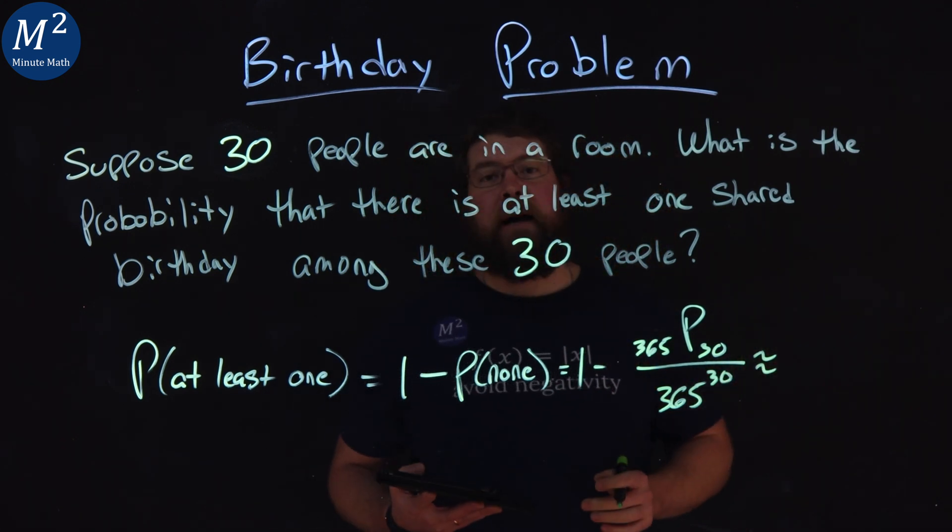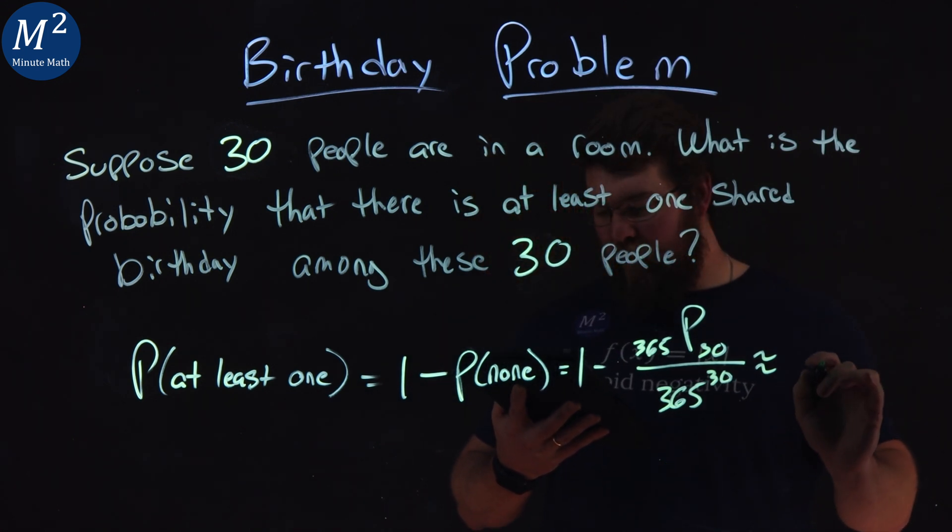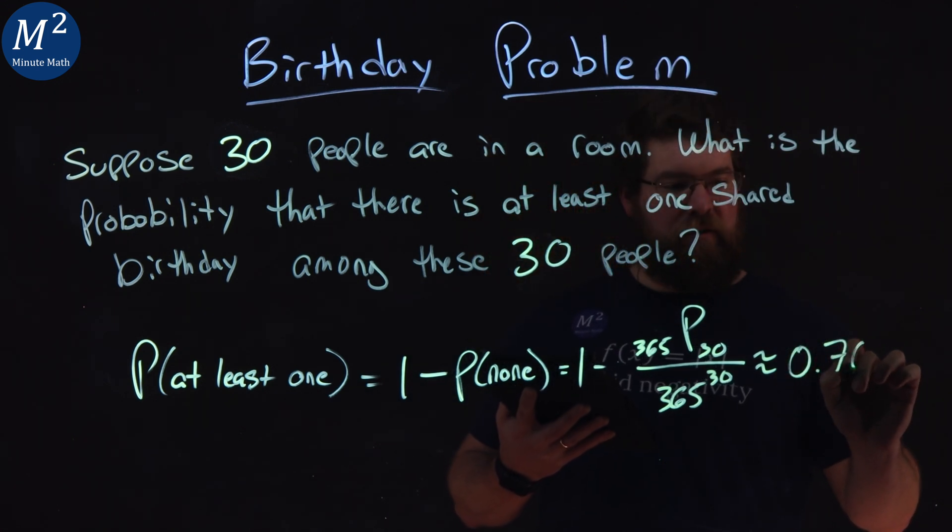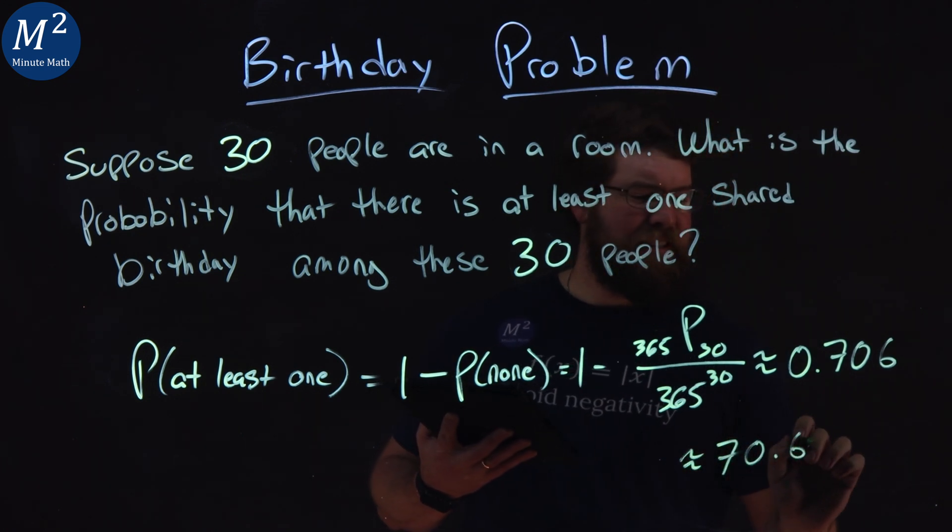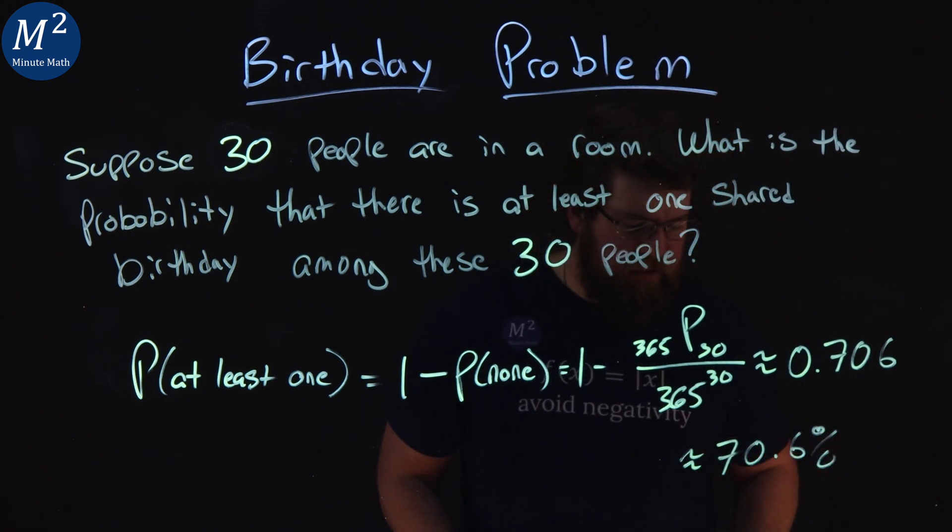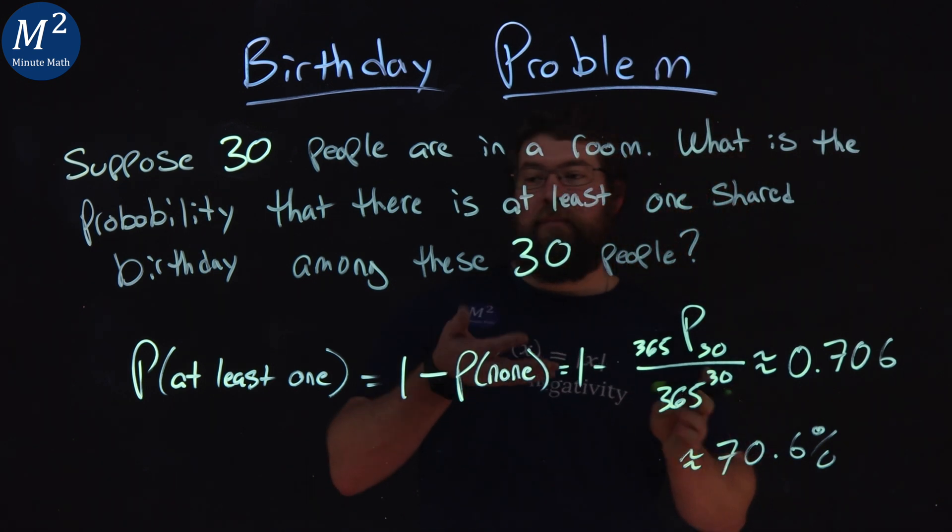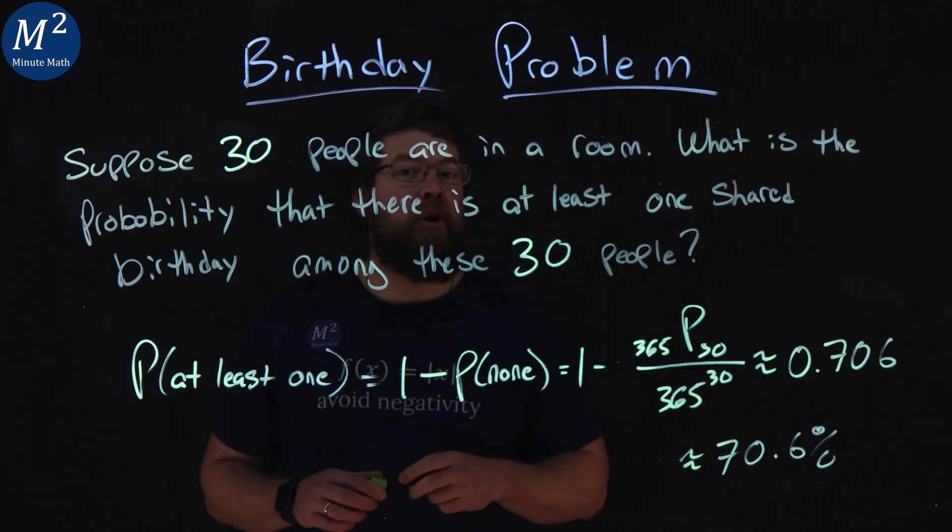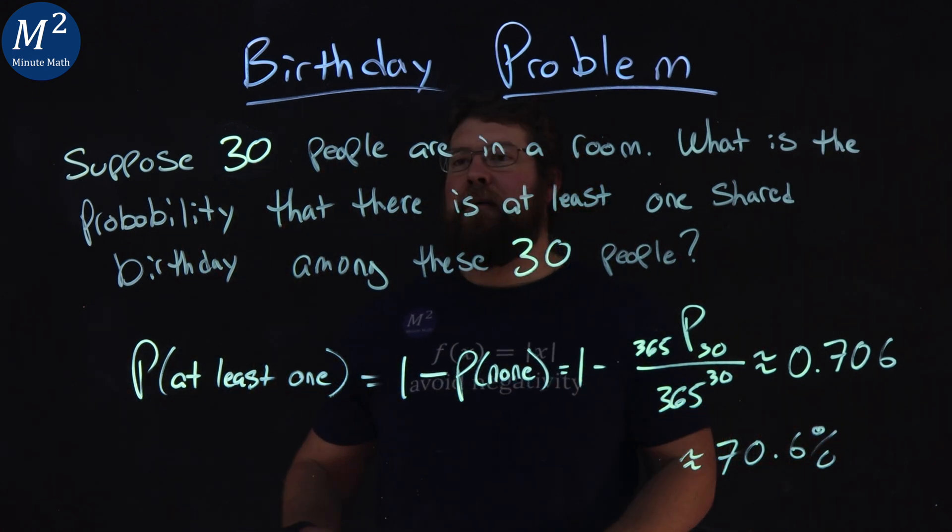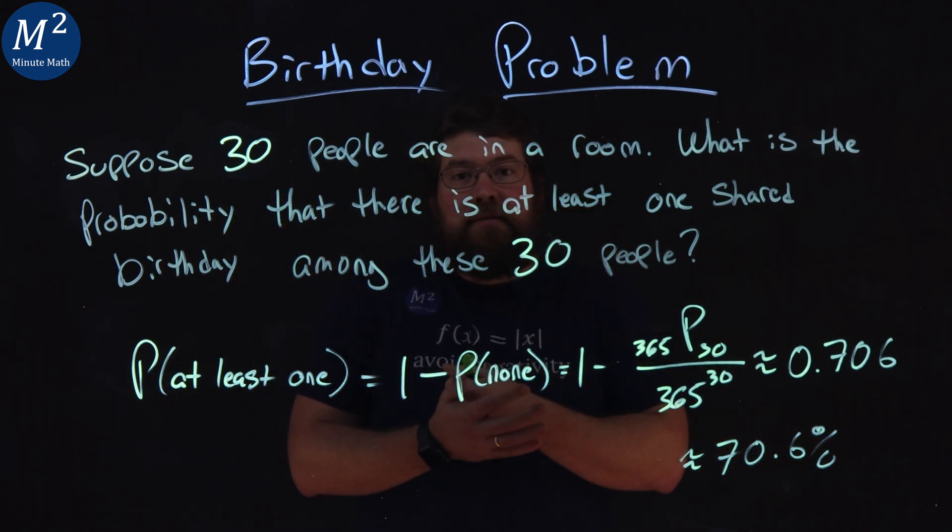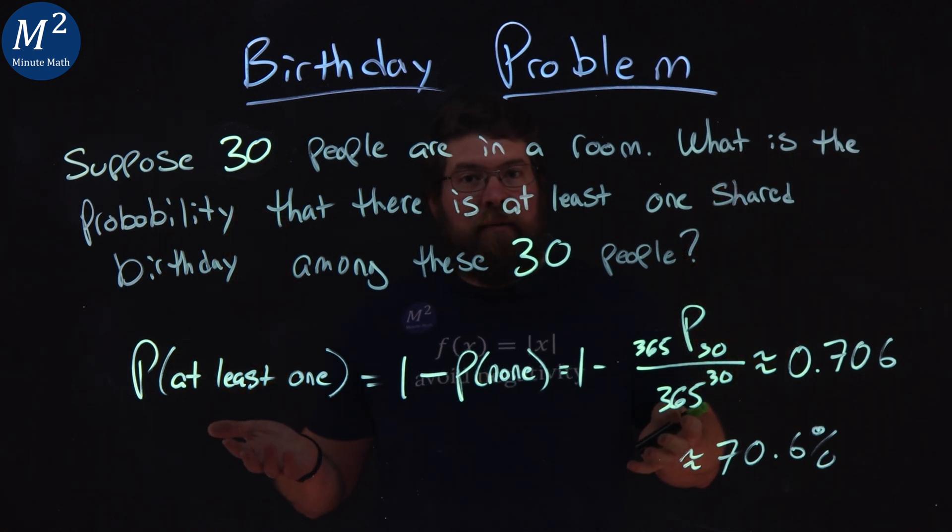Now, if you put that in your calculator, you end up with 0.706, which is about a 70.6% chance. So there is about a 70% chance if you have 30 people in a room, if every birthday is equally as likely, that at least one share a birthday among them.